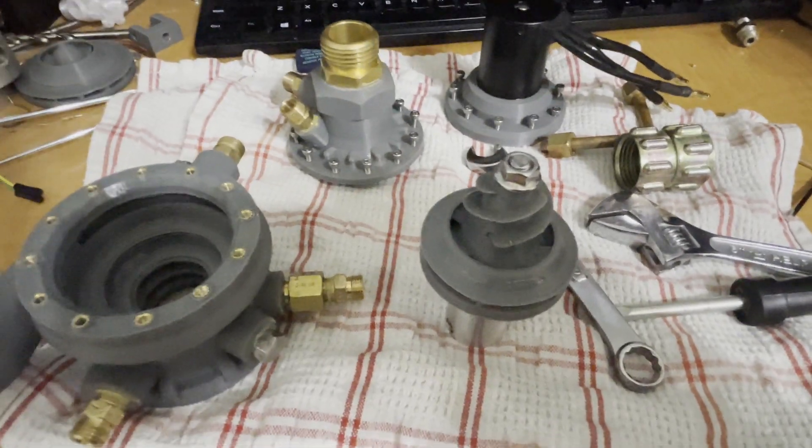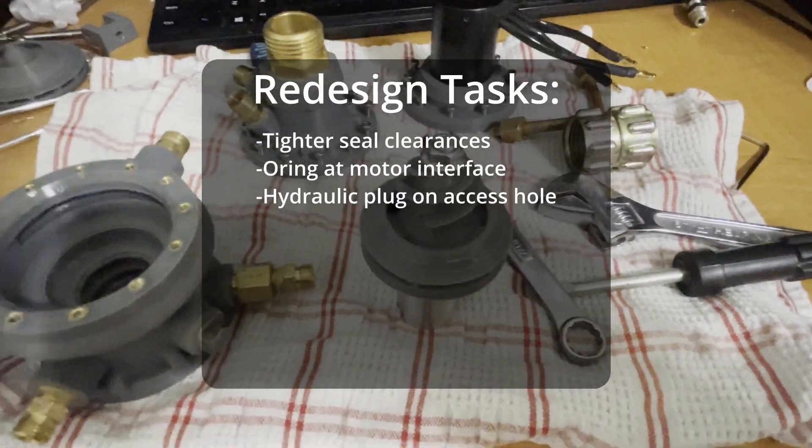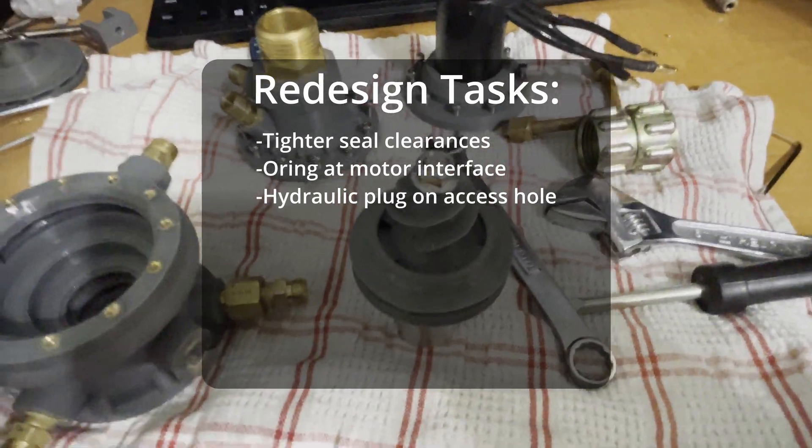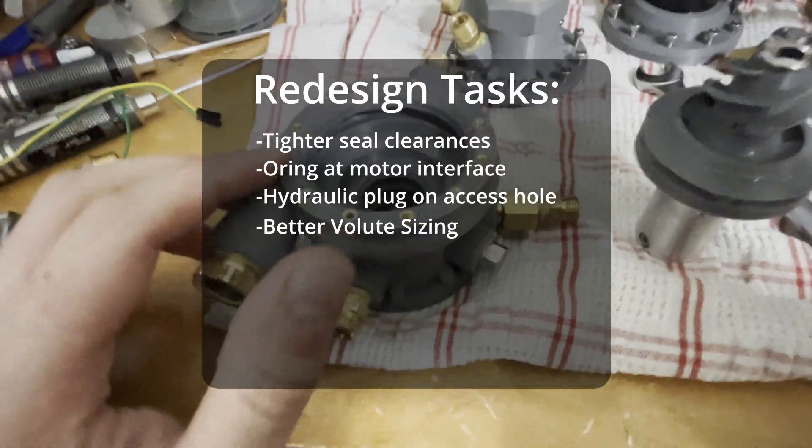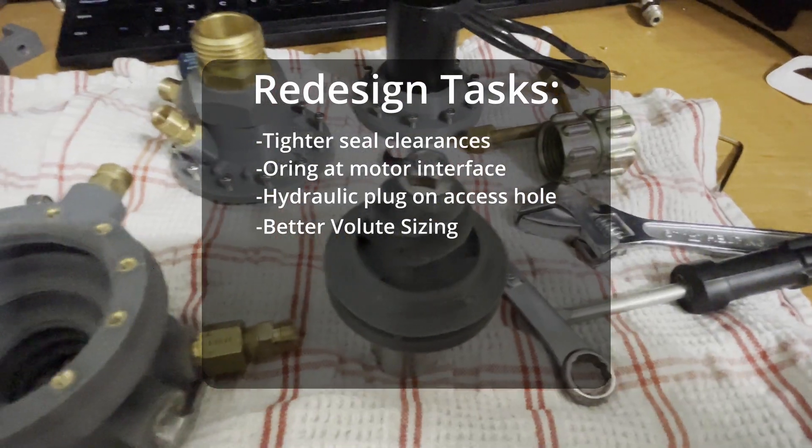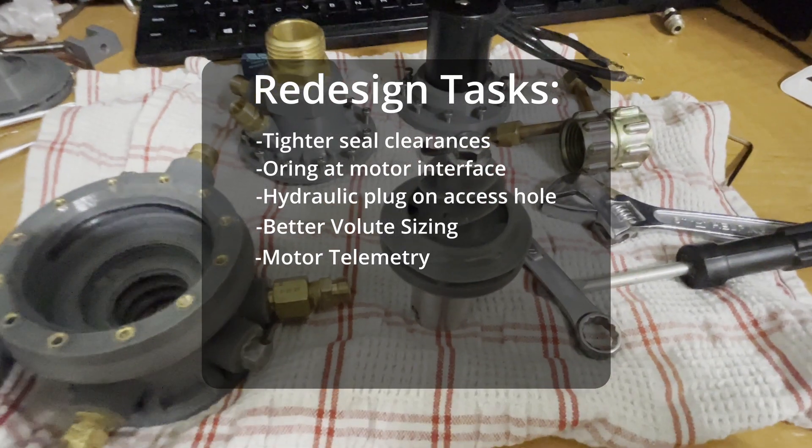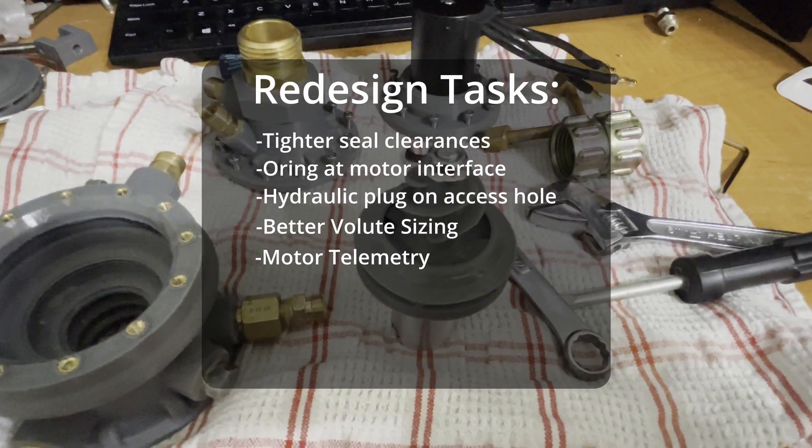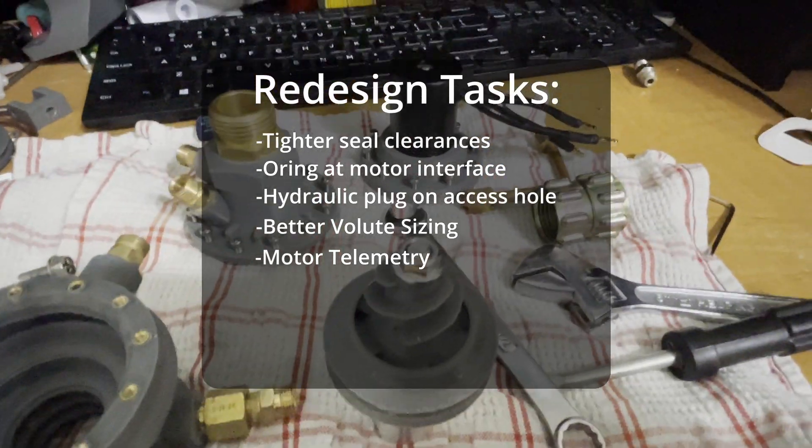I think the main lessons learned and things to address in the next iteration are better sealing. This volume needs to be optimized a little bit better. I want to have a way of measuring RPM and I need to figure out what was causing issues with the motor and why it couldn't reach the higher power levels.